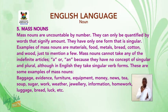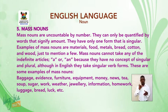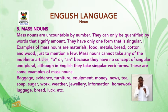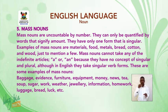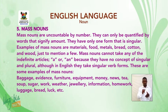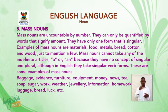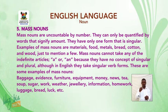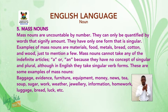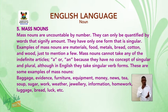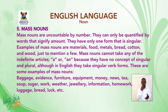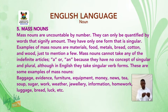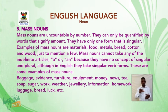Mass nouns are uncountable by number. They can only be quantified by words that signify amount. They have only one form — that is, singular. Examples of mass nouns include materials: food, matter, bread, cutting, and wood. Mass nouns cannot take the indefinite articles 'a' or 'an' because they have no concept of singular and plural, although in English they take singular verb forms. More examples: baggage, evidence, furniture, equipment, money, news, tea, soup, sugar, work, weather, jewelry, information, homework, luggage, bread, lock, etc.